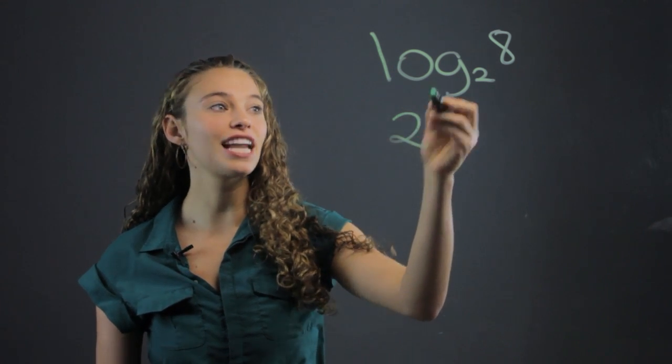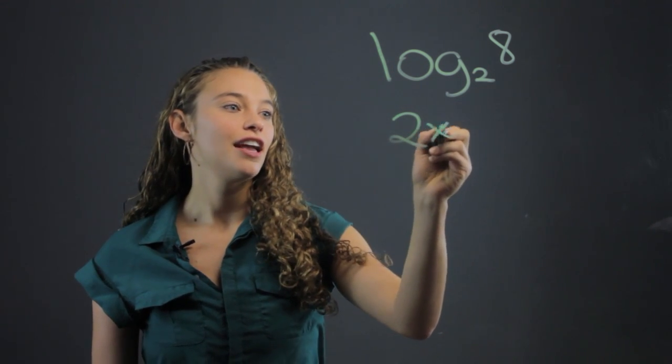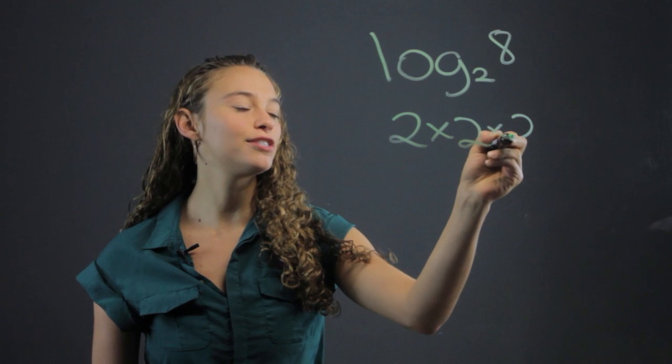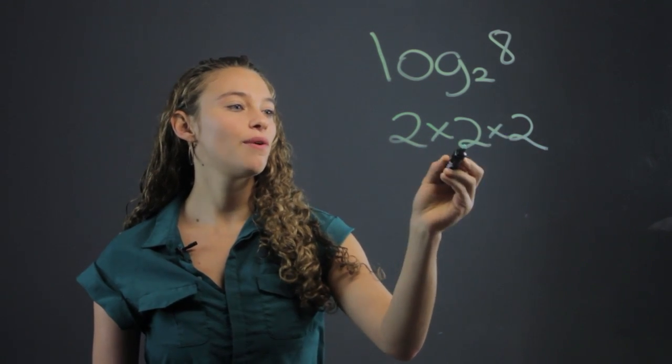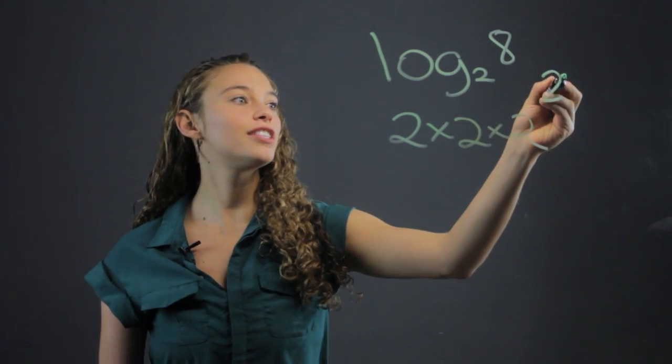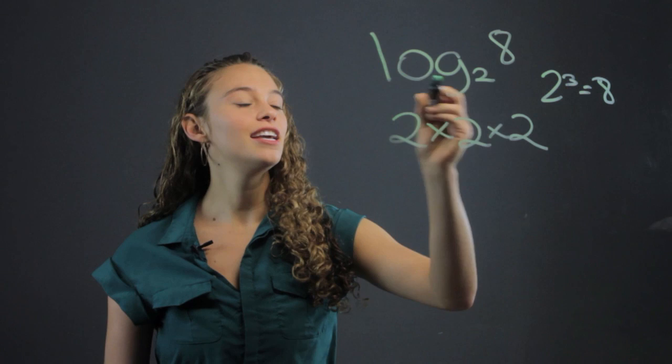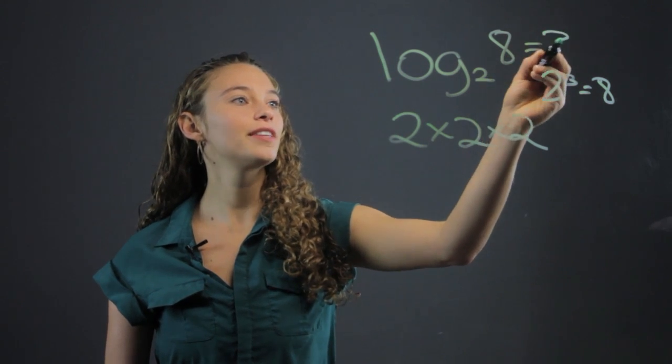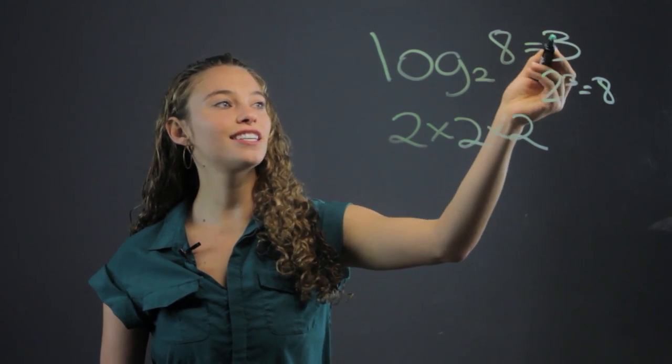how many times do you have to multiply 2 together to get 8? If we have 2 times 2 times 2, that's 4 times 2 is 8. There's three 2's, just like how 2 to the third equals 8. The answer of this problem, log base 2 of 8, is going to be 3.